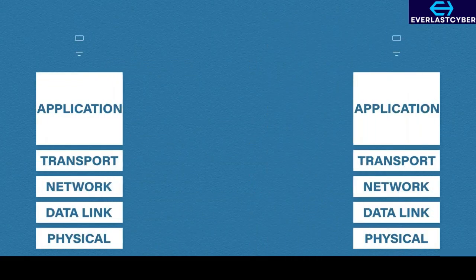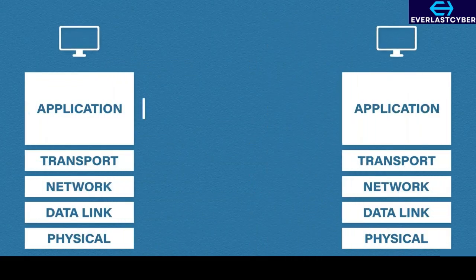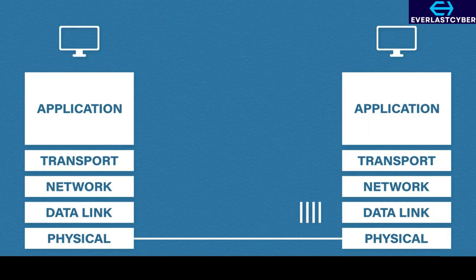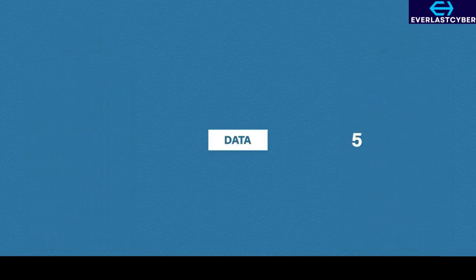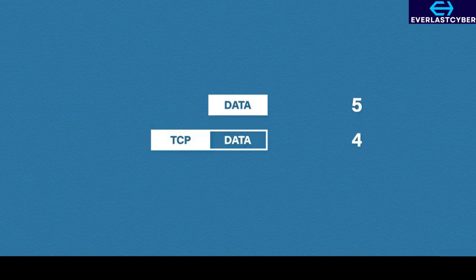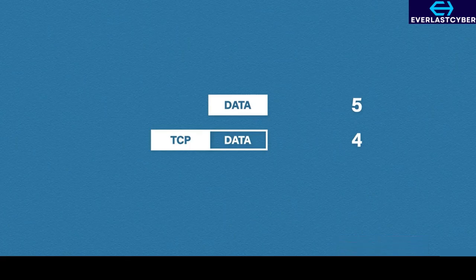As we send data, each layer will add its own bit of information. This process is called encapsulation. When we hit the physical layer, the data is transmitted over to the receiving device. The receiving device then starts to decapsulate the data. We saw this in the OSI model, but in this video we will take a closer look. We start with our application data at layer 5, which is then passed down to the next layer where the transport information is added. This is a TCP header. Each time a header is added, it will contain specific information — for instance, a TCP header will contain things like the source and destination port numbers, sequence numbers, and a few more bits of information.